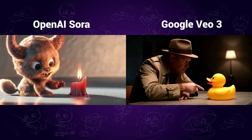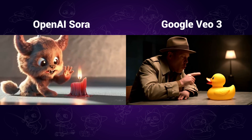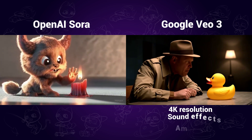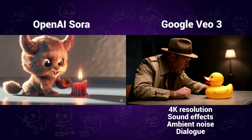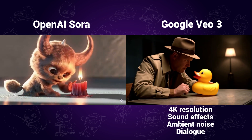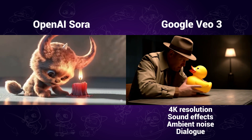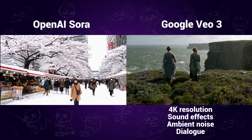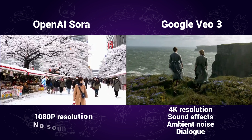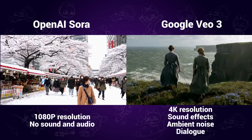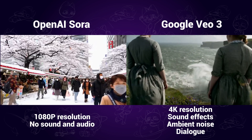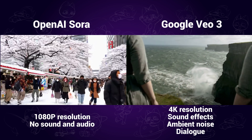What's the difference? The new VO3 model supports 4K output, sound effects, ambient noise, and dialogue, while OpenAI Sora only supports up to 1080p resolution with no sound or audio. VO3 almost beats Sora in every aspect.